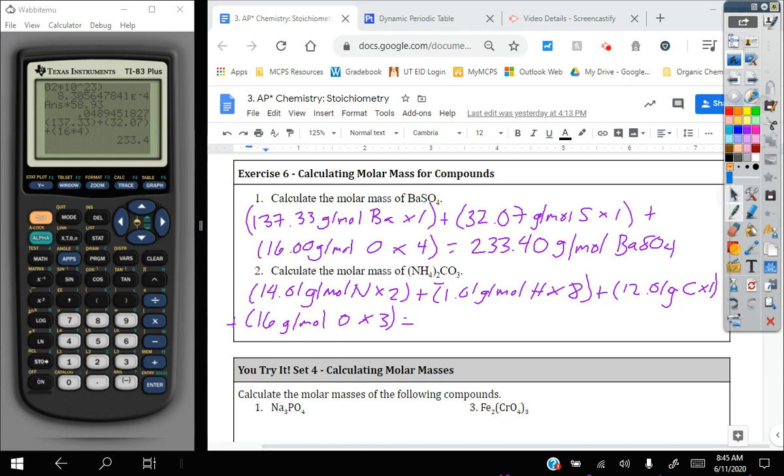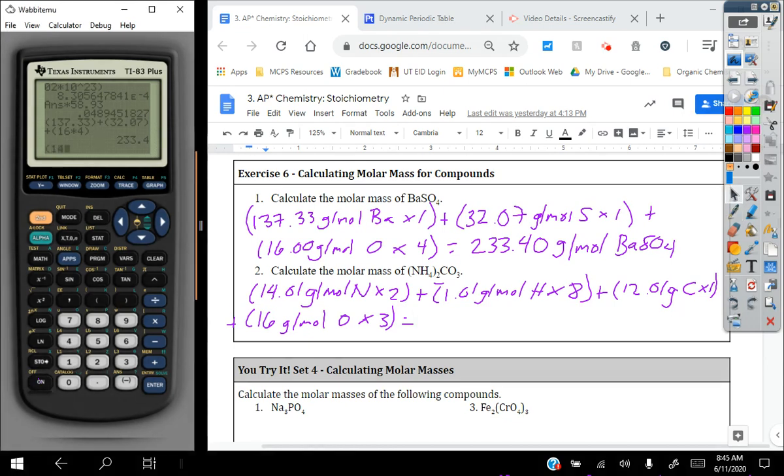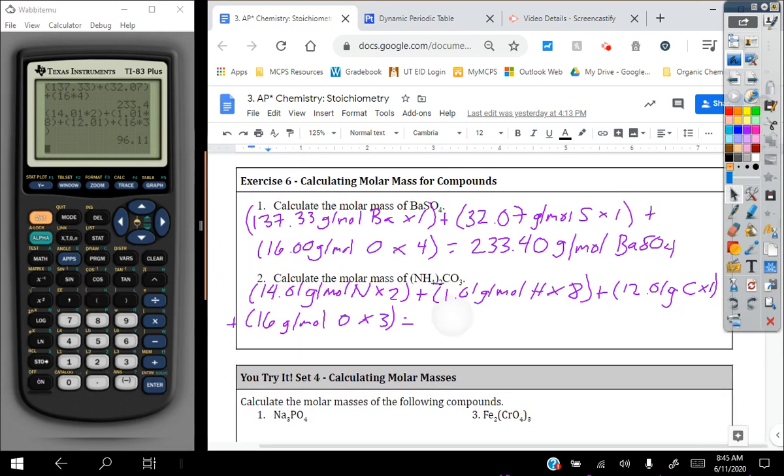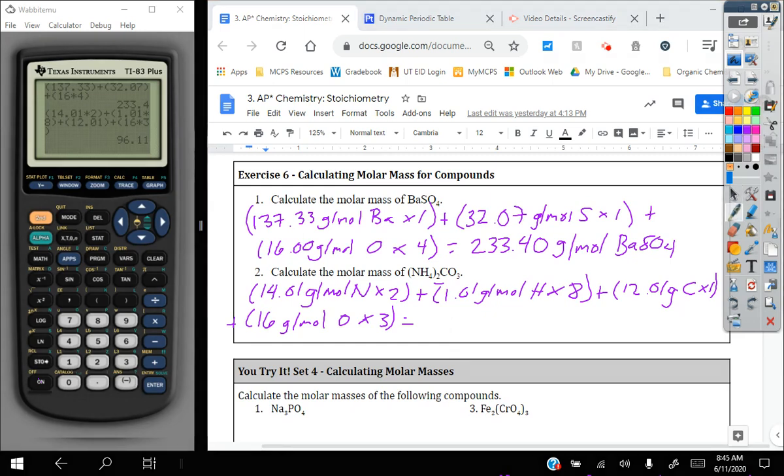So we go through in our calculator here and 14.01 times two, close parentheses, 1.01 times eight, close parentheses, plus 12.01 plus 16 times three. And with this, we get a mass of 96.11 grams per mole for ammonium carbonate (NH4)2CO3. It is important that you write the formula after a molar mass. That way you're clearly labeling all parts of your unit.